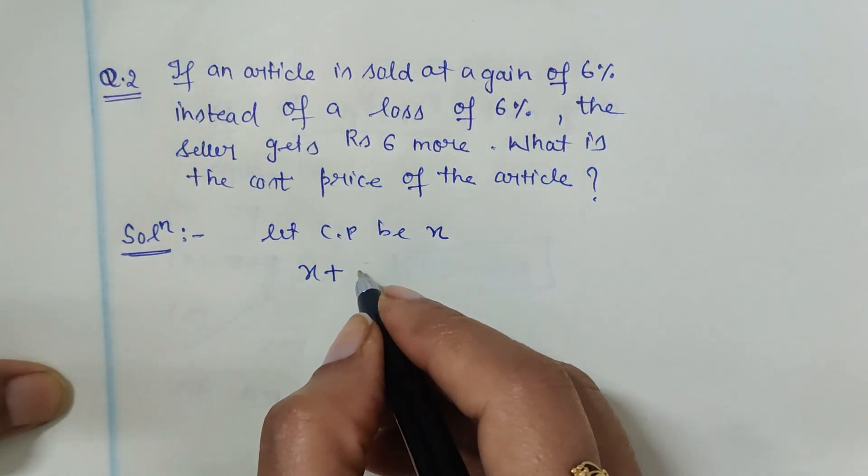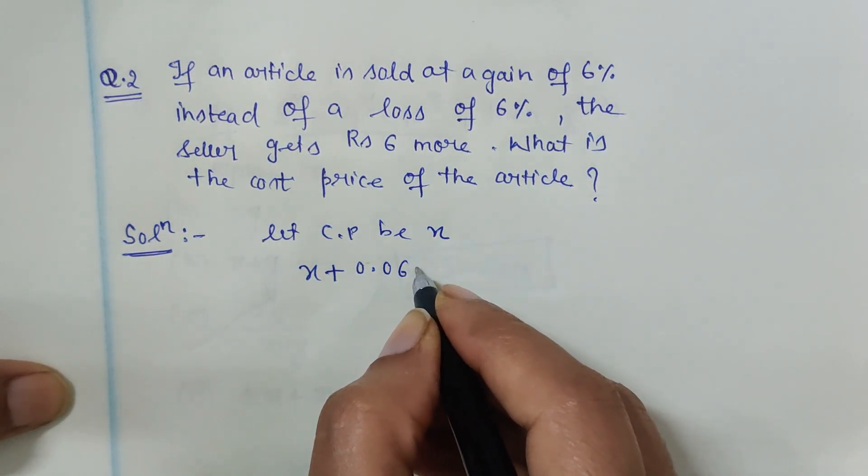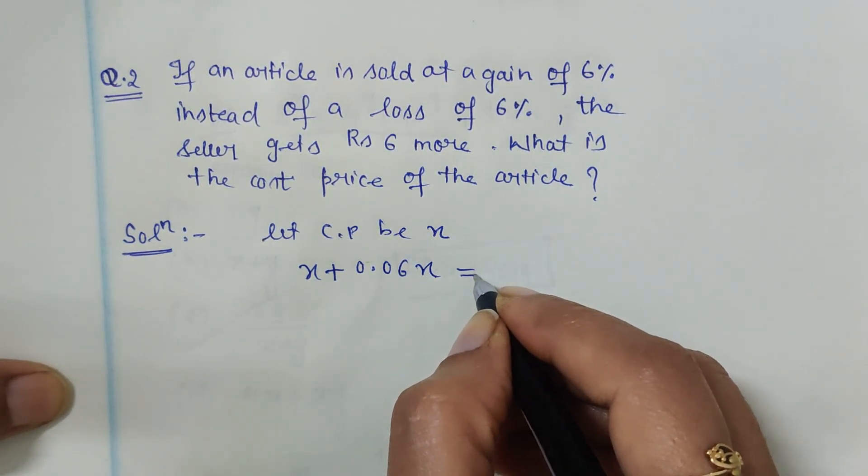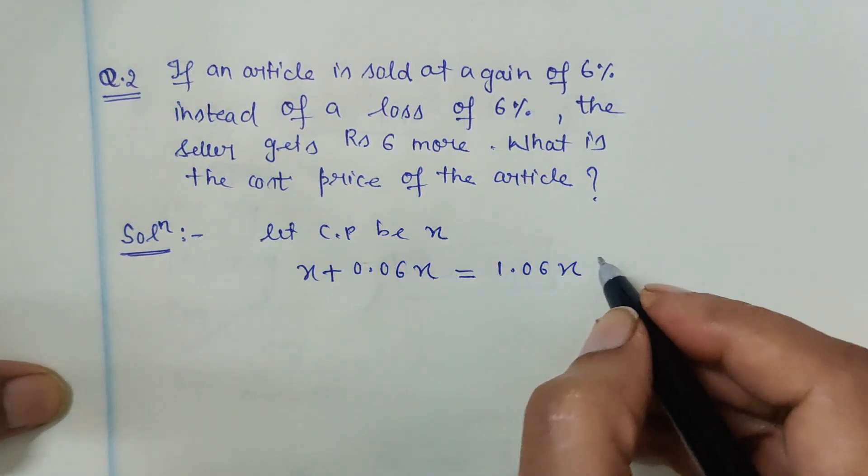6% means 0.06 of X, so total gain would be 1.06X. This is the gain, this is the selling price.